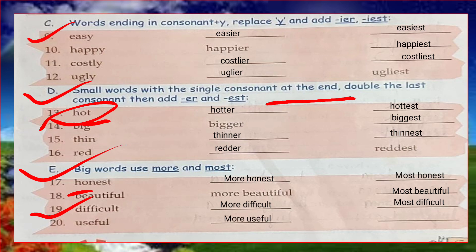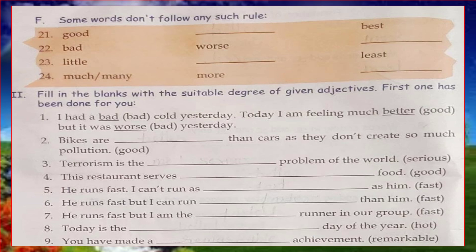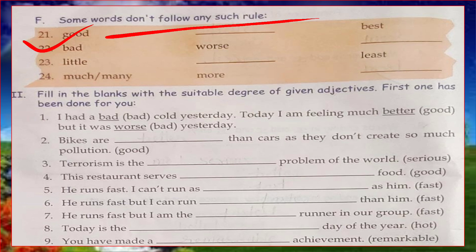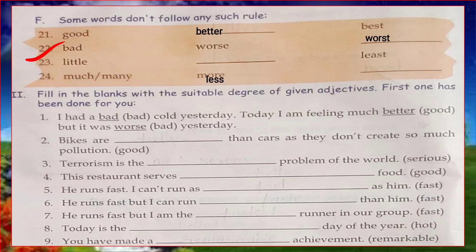Some words don't follow any rule — these are irregular forms. Good → better → best. Bad → worse → worst. Little → less → least. Much/many → more → most.